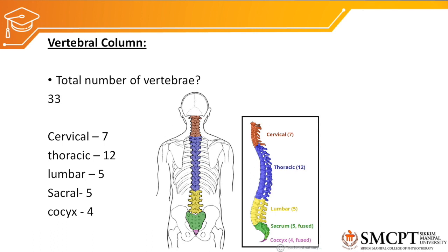In the picture, you can see the cervical vertebrae just below the occiput, and the thoracic vertebrae between the cervical and lumbar vertebrae, shown in blue. The lumbar vertebrae are shown in yellow, between the thoracic vertebra and the sacrum. The sacral vertebra is in green, between the coccyx and the lumbar vertebra, and the coccyx are the most distal — we have 4 coccyx vertebrae.